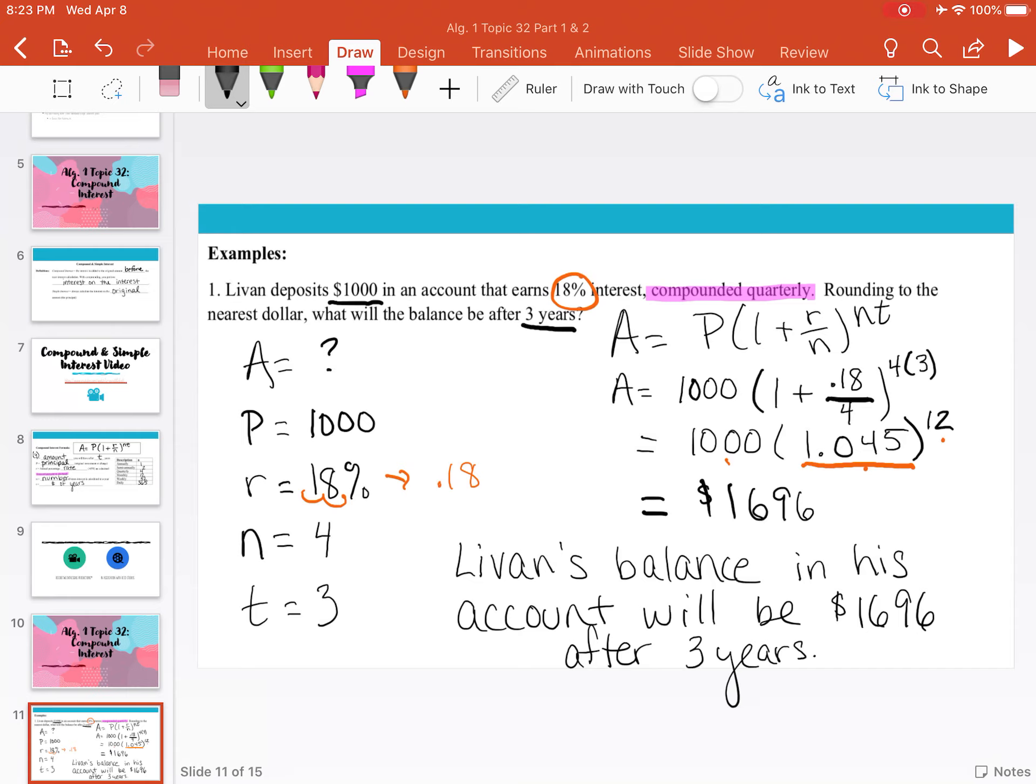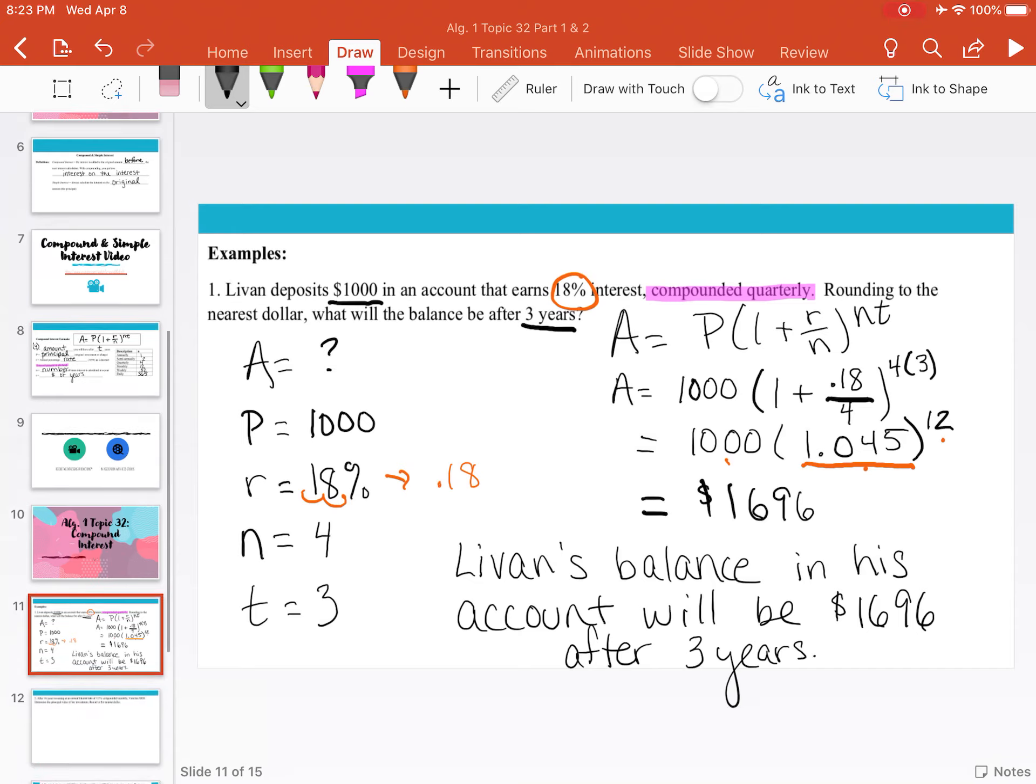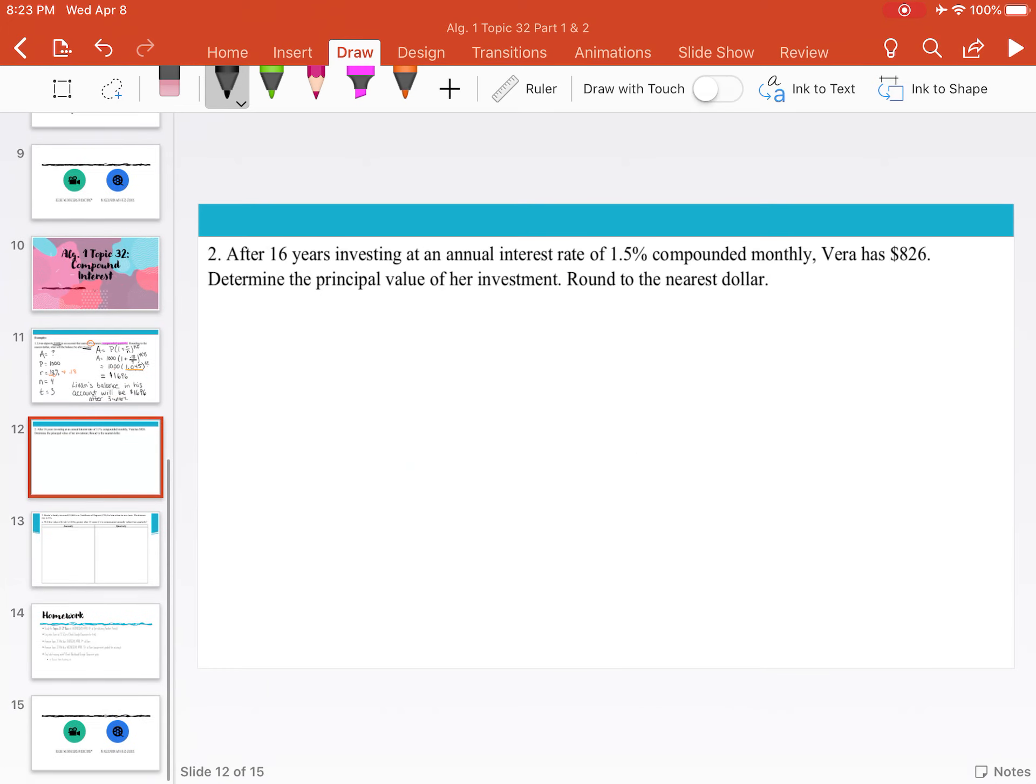So Levon's balance in his account will be $1,696 after three years. And there we go. That is the first example.